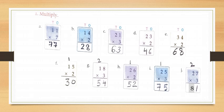Now children, C part: twenty one multiply by three. First multiply the ones by three — that is one into three is three. Then multiply the tens by three — that is two into three is six. So your answer will be sixty three.